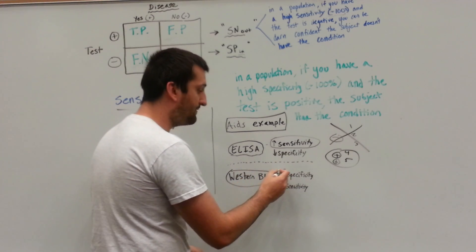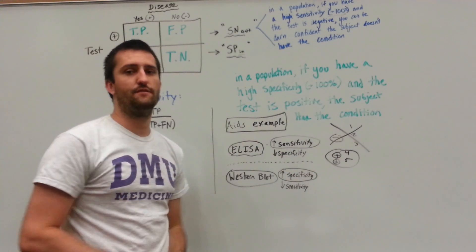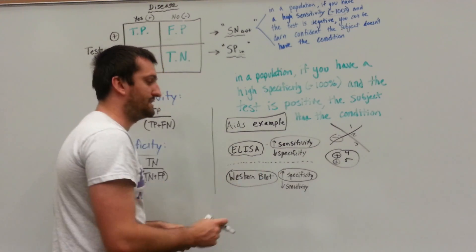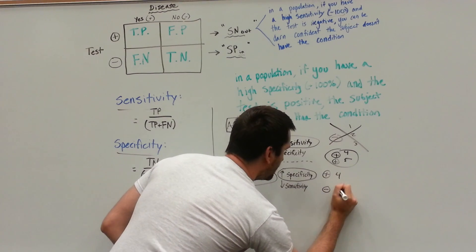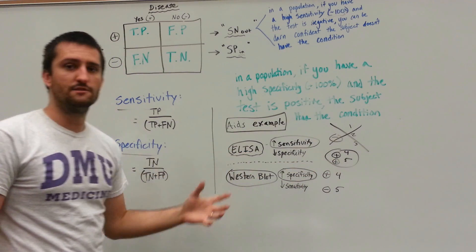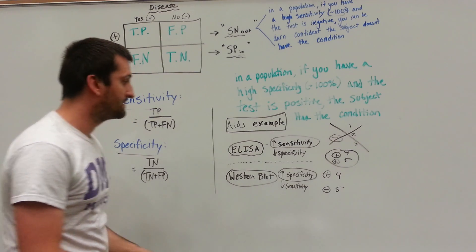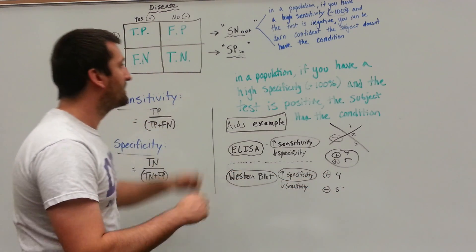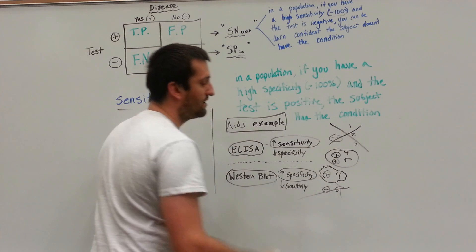Our Western blot is highly specific, but it's not very sensitive. You don't test a Western blot on all 350 million people in the United States to rule out AIDS. You don't do it. It's not very sensitive, but however, it is very specific. Specific, we rule in a disease. So let's say it's positive for patient 4 and negative for patient 5. Our ELISA picked them up, and now we do a Western blot. So this is a real-world example. You do two ELISAs and a Western blot after those ELISAs, typically on AIDS patients. Since it's highly specific, we're going to have a positive test on 4 and a negative test on 5. A positive test spins in. So patient 4 is going to have AIDS. Patient 5 will not have AIDS.